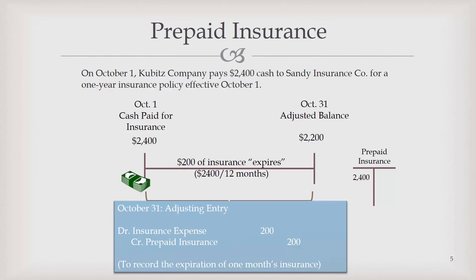Our prepaid insurance, which started with a balance of $2,400, would go down by $200 and now has a remaining balance of $2,200 in that account. We would repeat this process with the same adjusting entry at the end of November and December and for the next 11 months until we show that the whole insurance policy has been used up. At that point, it's time to buy a new one and you start the process over.